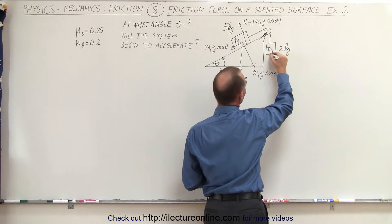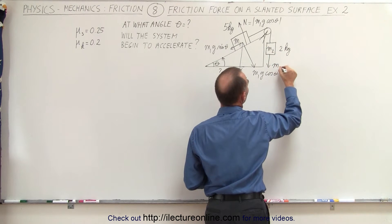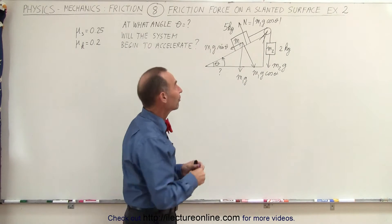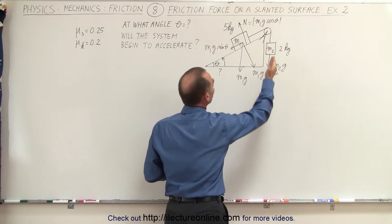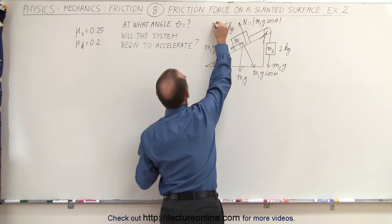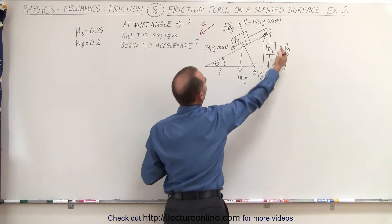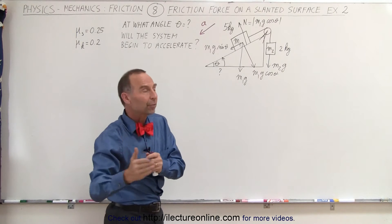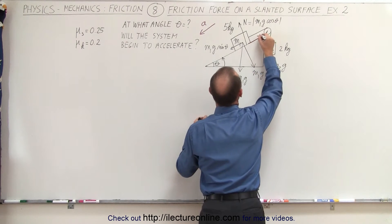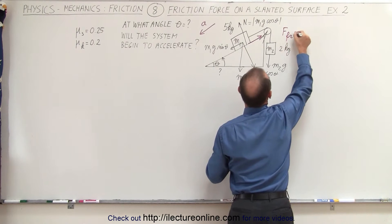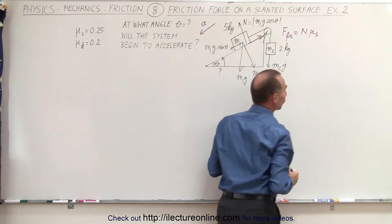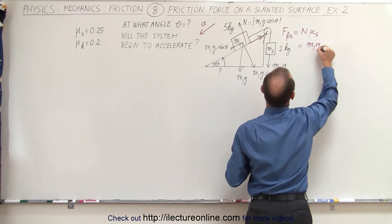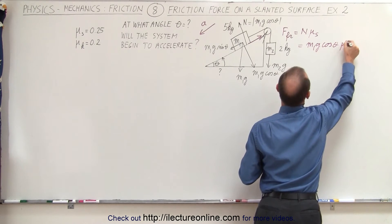We also have the force of gravity pulling down on block 2, M2g, and we have one more force, which is the friction force. The direction of the friction force will be opposite to the assumed motion. We're going to assume that the whole system accelerates around the pulley, which means the friction force will be in the opposite direction. The friction force equals the normal force times mu, and since we're assuming everything is static, this equals M1g cosine theta times mu sub s.